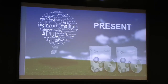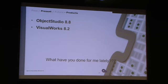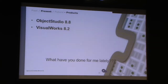What about the present? Our two new products, which will be available imminently, are Object Studio 8.8 and VisualWorks 8.2. What have you done for me lately — what is there to look forward to in this release? Some of the changes we've made include upgrading the build chains — in other words, the compilers and platforms we use to develop the product. We've updated our Windows, our OSX, and Linux had a major upgrade last cycle.